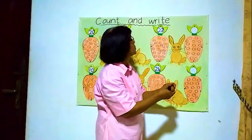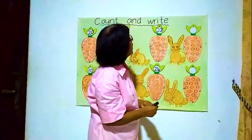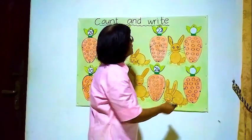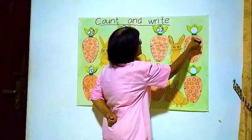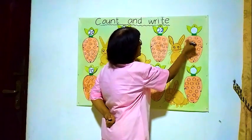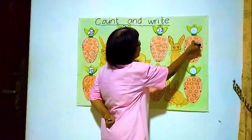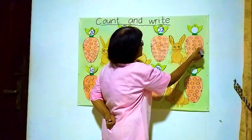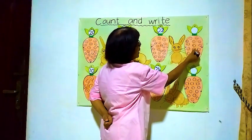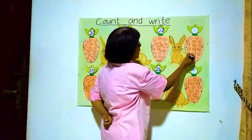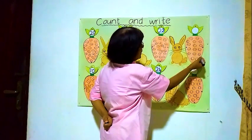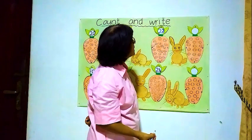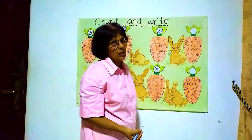Now this one — how many balls in this carrot? We'll count from here. One, two, three, four, five, six, seven, eight, nine, ten, eleven, twelve, thirteen, fourteen, fifteen, sixteen. There are sixteen balls inside this carrot.